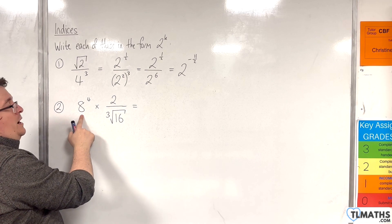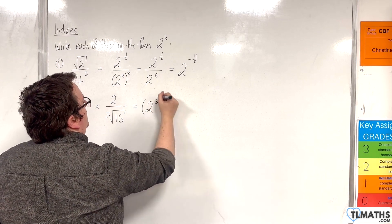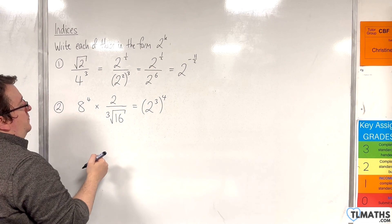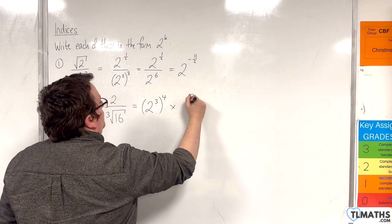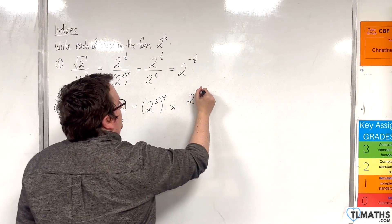So 8 we know is 2 cubed, so 2 cubed, and that's to the power of 4, times by, well we've got 2 to the power of 1 if you like, you can put the 1 there.